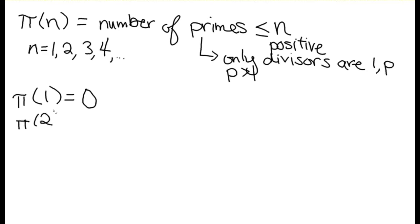Pi of 2, we want to count all the numbers smaller than or equal to 2 that are prime. Well the only numbers smaller than or equal to 2 are 1 and 2, and 1 is not prime, 2 is. So that's 1 prime number smaller than or equal to 3.